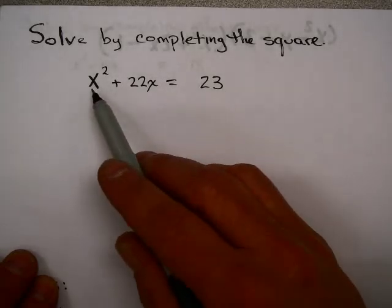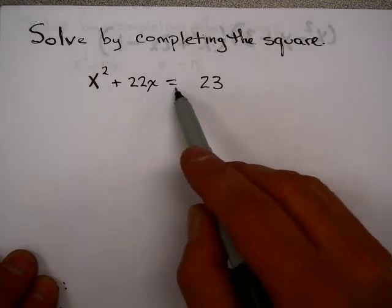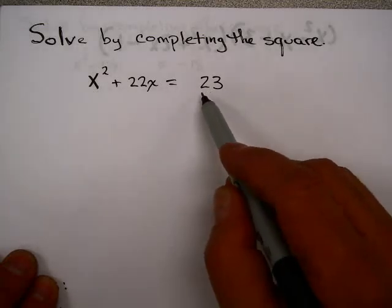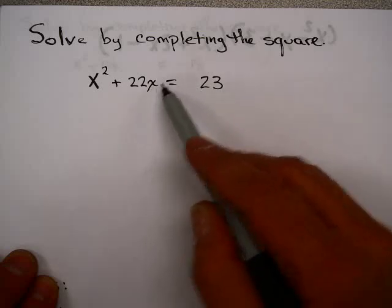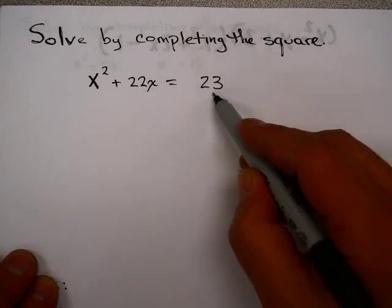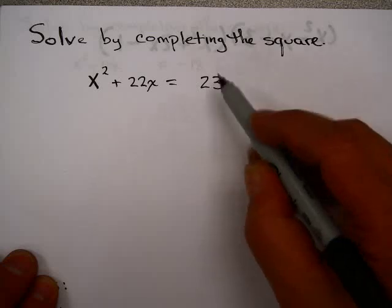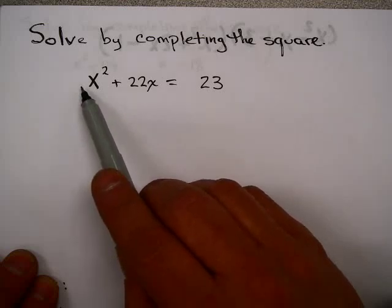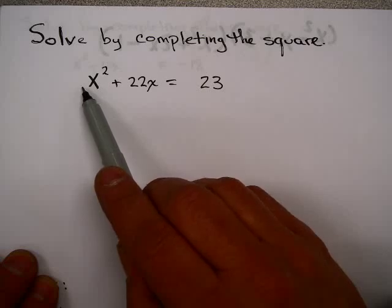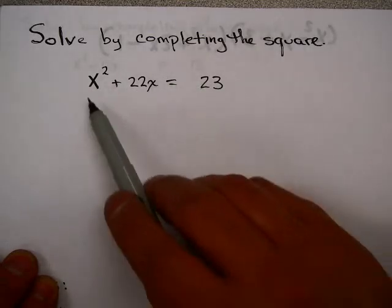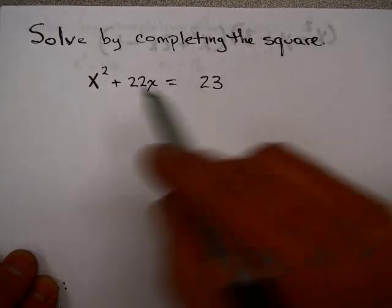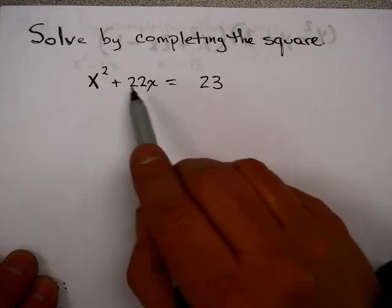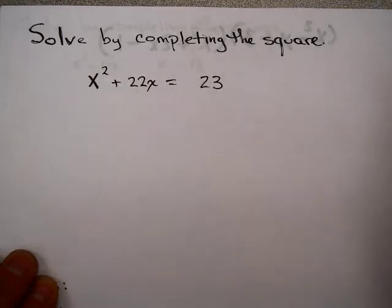In this example, you'll notice we have x squared plus 22x equals 23. To complete the square, the first thing you have to do is make sure that the constant term — the term without an x — is on its own on one side of the equation. Then make sure the leading coefficient, the number in front of x squared, is one. If it's not, divide it out. We don't have either of those situations, so we're going to do the completing the square process.